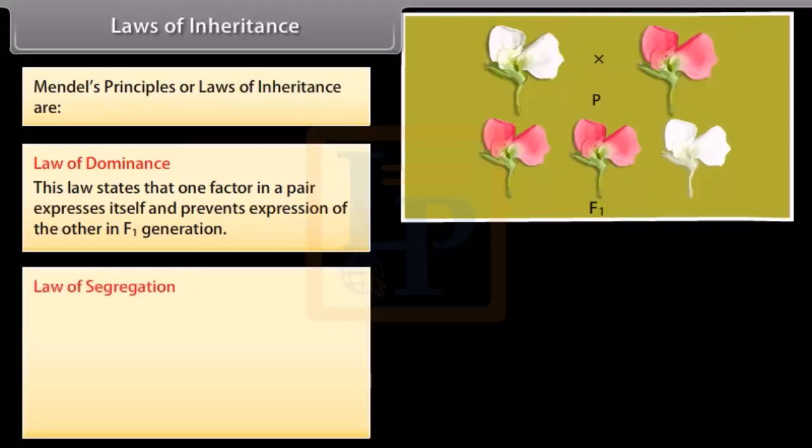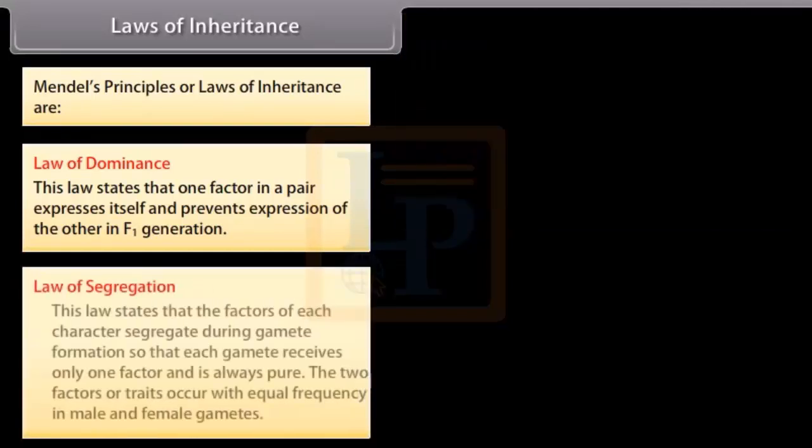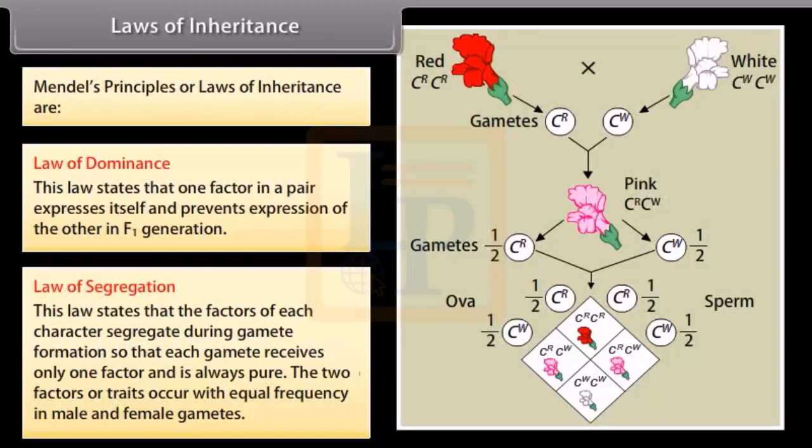Law of segregation. This law states that the factors of each character segregate during gamete formation so that each gamete receives only one factor and is always pure. The two factors or traits occur with equal frequency in male and female gametes.